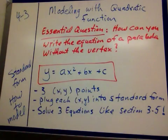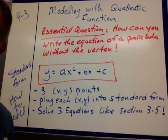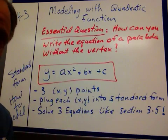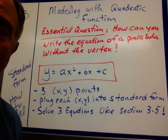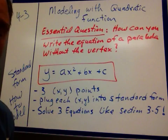Our essential question is how can you write the equation of a parabola without the vertex? With only knowing three points on the curve. You have to have three points because we're talking about a parabolic curve. If you only take two points, it could be a line, so we need three points.